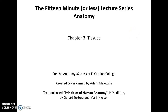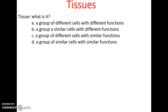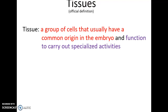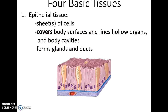15 minutes or less lecture series, Human Anatomy, Chapter 3: Tissues. Tissues are a group of cells that usually have a common origin in the embryo and function to carry out specialized activities. Those cells are all similar and they're sort of doing the same thing.